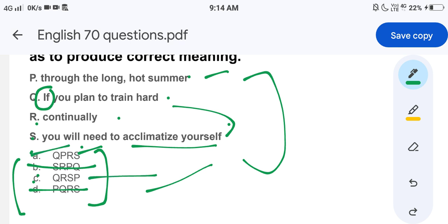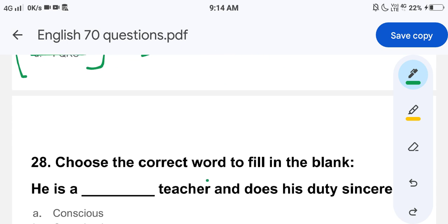Now let's also look at C which we have left. C is QRSP. If you plan to train hard continually, you will need to acclimatize yourself through the long hot summer. This sentence makes sense. And what does it mean? It means that one has to adapt oneself because of the changing weather. So your logic will help you here. The elimination method will help you, and you will be able to do it.